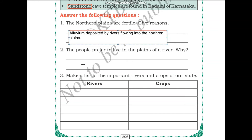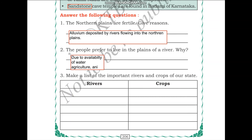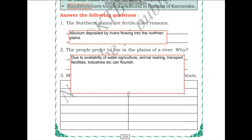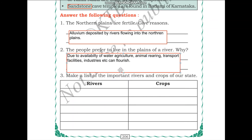Question: Why do people prefer to live in the plains of a river? Due to the availability of water, agriculture, animal rearing, transport facilities, and industries can flourish. Because of the highly fertile soil, agriculture is promoted, and this leads to development of different activities supported by agriculture such as animal rearing, transport facilities, and industries. This is why people prefer to live on the banks of a river.